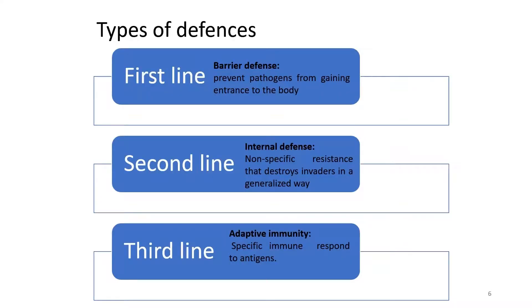Let's take a look at the first part of this topic: the three lines of defense. There are three types of defense or immune system. You can classify them into three: the first line, the second line, and the third line.